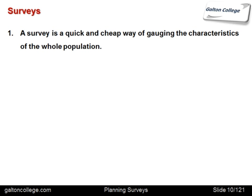Now, in terms of surveys, a survey is a quick and cheap way of gauging the characteristics of the whole population. The whole population may be the output of cars from a car company, and a survey could be a quick and cheap way of checking the quality of the cars. Or the population could be people in the country, or students at university or colleges. Whatever is decided as the population, a survey is a quick and fairly cheap way of examining the characteristics of that population.